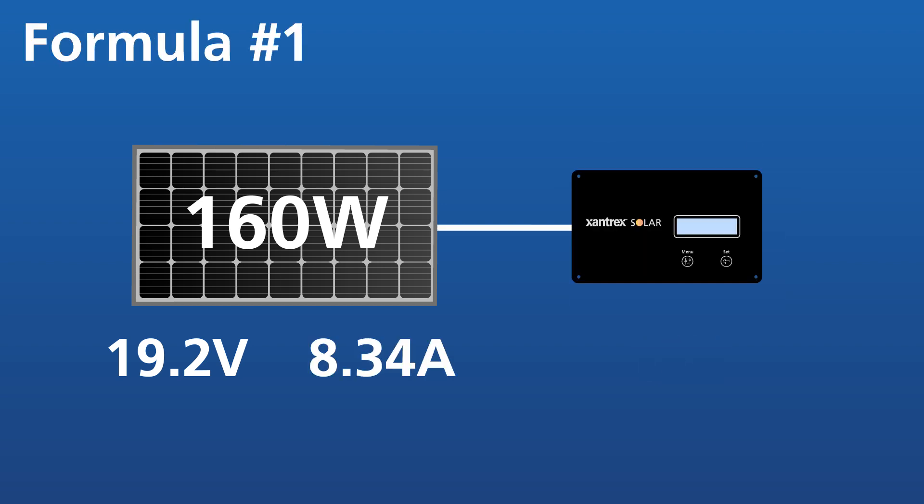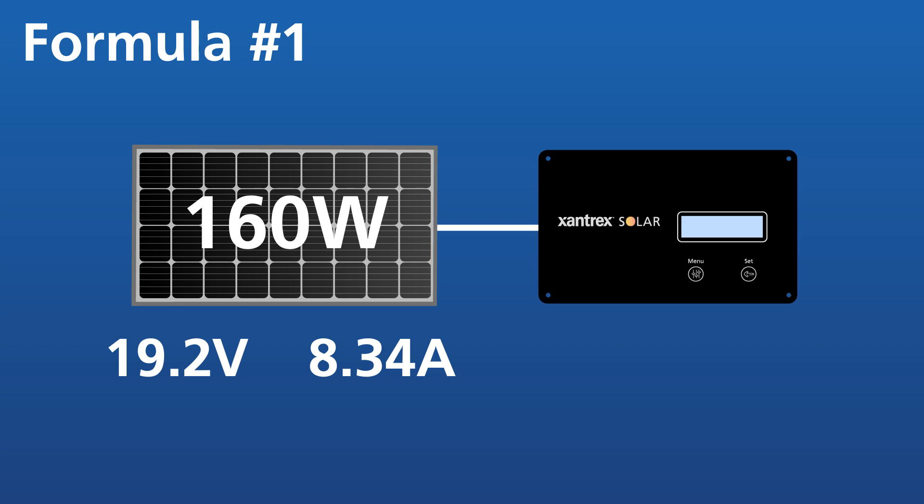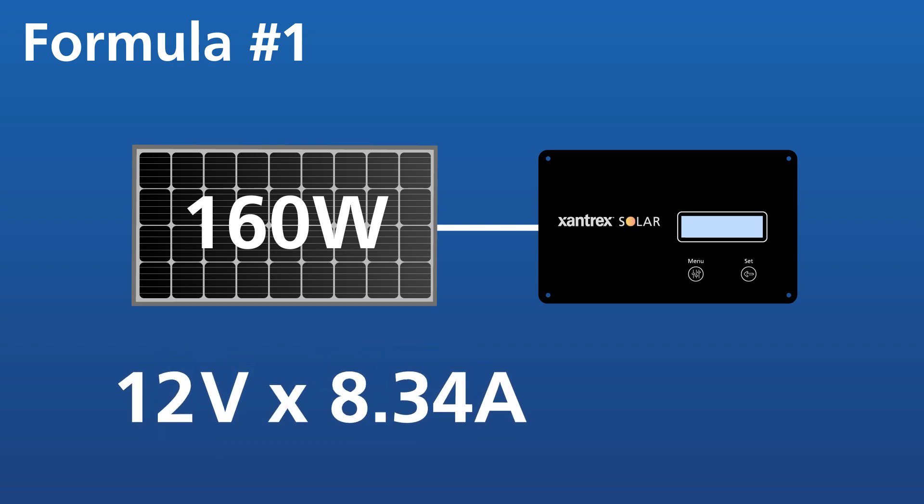Formula number one, using a PWM charge controller connected to a 160-watt panel. With a PWM, the panel voltage lowers from 19.2 volts to 12 volts and the charging current stays the same at 8.34 amps. 12 volts multiplied by 8.34 amps equals 100 watts power output.